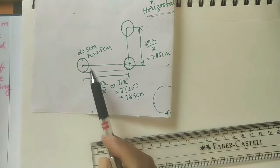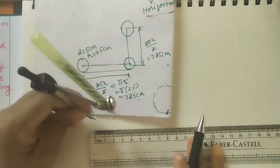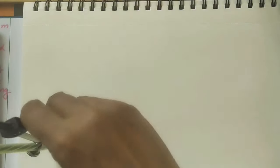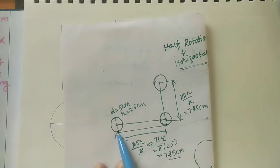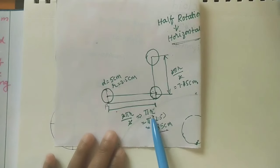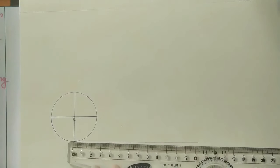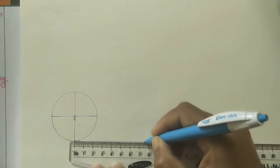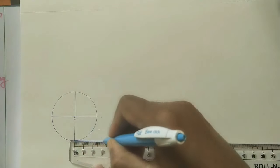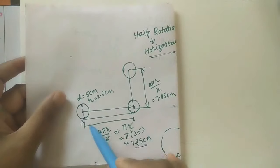Let us do this diagram using instruments. First take the center of the circle; from center take radius 2.5 cm. Using compass I am taking 2.5 cm - with center point C, do the circle with 2.5 cm radius. Draw the horizontal diameter and vertical diameter. From this point, the center line distance is πr = 7.85 cm. Do the horizontal surface of length 7.85 cm and mark it.